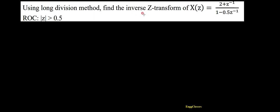Welcome to NG Classes YouTube channel. In this video lecture we shall consider a numerical using the long division method: find the inverse Z-transform of X(z) = (2 + z⁻¹) / (1 - 0.5z⁻¹), with ROC given as |z| > 0.5. This is one of the easiest numericals one can expect in signals and systems using the long division method.